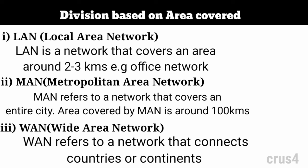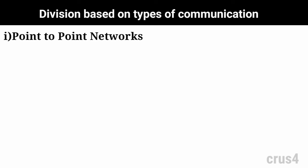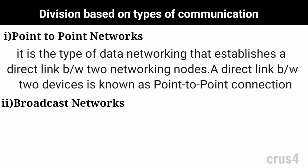Now let's discuss division based on types of communication. This division has two basic types: point-to-point networks and broadcast networks. Point-to-point networking is a type of network that establishes a direct link between two network nodes. A direct link between two devices, such as a computer and a printer, is known as a point-to-point connection.